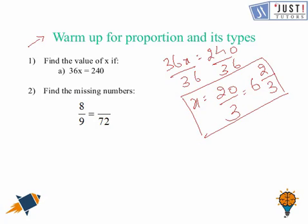Now the next question is, we need to find out the missing number, which is 9 to 72. That is, 9 times 8 is 72. So 8 times 8 is 64. So the answer is 64.